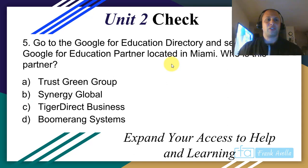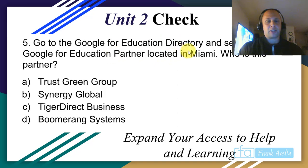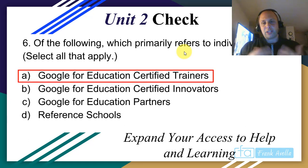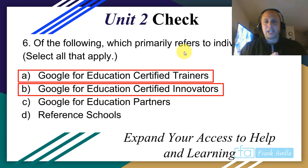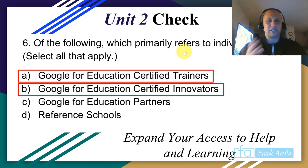Try this yourself: go to the Google for Education directory and search for a Google for Education partner in Miami — pause and try it out. Just type 'Google for Education directory' in Google Search, go to your filters, and search it out. Regarding which expert types refer primarily to individuals: Google Certified Trainers and Google Certified Innovators are individuals. That's Unit 2 — it's really an introduction, mostly conceptual. Unit 3 gets into a lot of Google tools, and unit 4 is really packed.